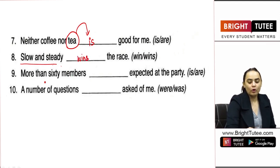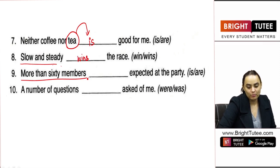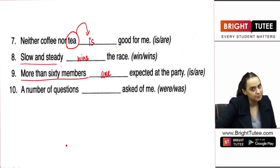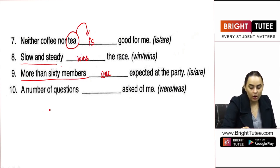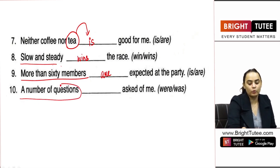'More than 60 members' — the entire subject 'more than 60 members' is plural, so 'are expected at the party.' 'A number of questions' — 'a number of questions' is plural, so 'were asked of me.'